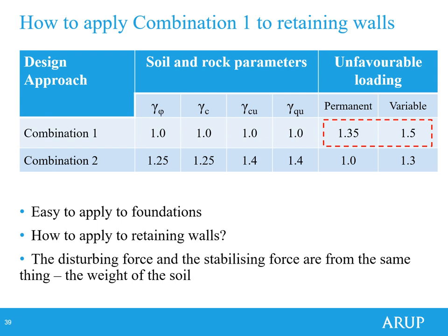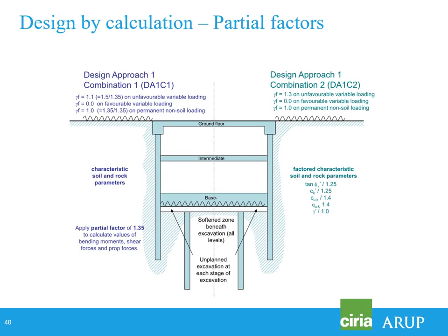This is resolved generally by something in Eurocode 7 called the single source theorem, which states that if you have the same action destabilising and stabilising, you can apply the partial factors to the effect of the action rather than to the action itself. This became the common approach in the UK to deal with Design Approach 1 Combination 1. You apply a partial factor of 1.35 to the effect of the action — to bending moments, shear forces, and any prop forces.